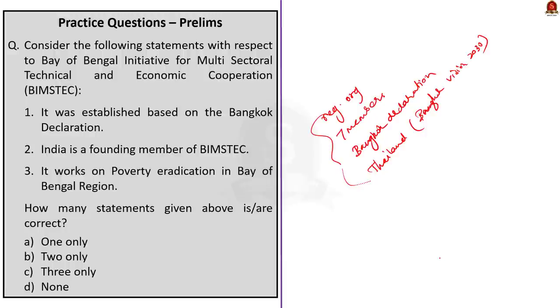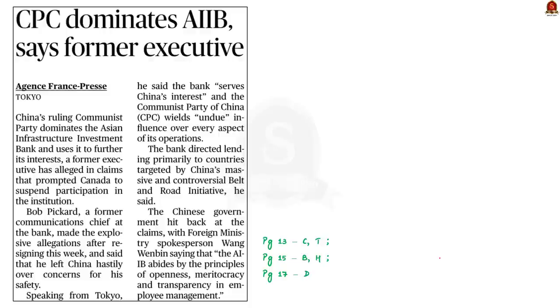With the learned points in mind, now we will move on to the next article discussion. Look at this article, Bob Bicard, former communication chief at Asian Infrastructure Investment Bank has made allegation against China. He said that AIIB is serving only the interest of Communist Party of China. He also said China is having a greater influence in AIIB and it is lending primarily to countries which are targets for the China's Belt and Road Initiative. In this context, let us learn about the Asian Infrastructure Investment Bank.